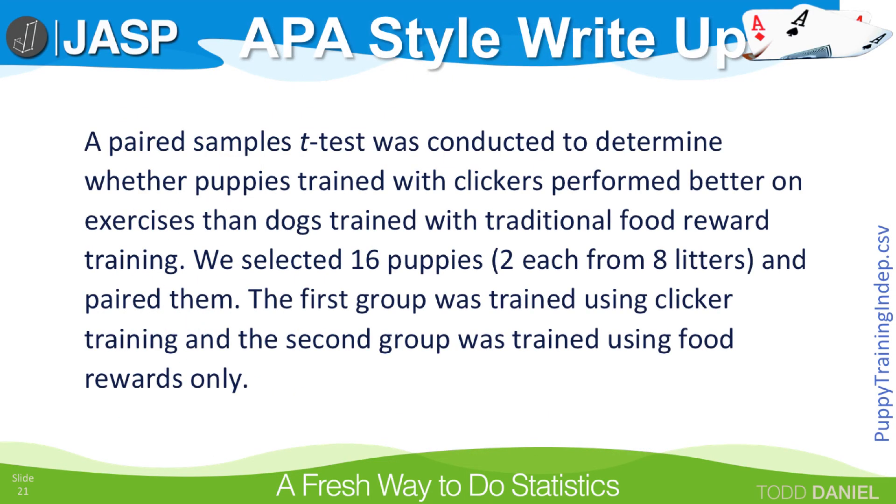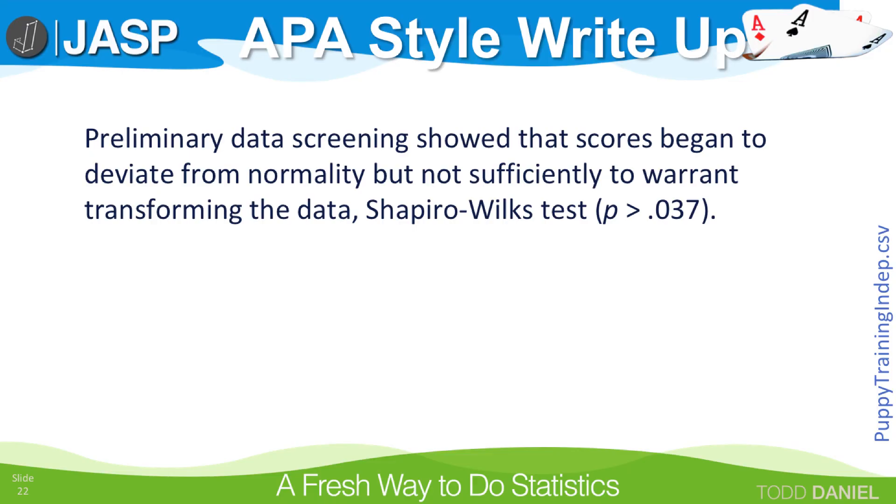Here is an example of how we might write up these results in APA style. First, I would describe my research design and how I conducted the experiment. Then I would describe my assumptions checks. We will interpret the Shapiro-Wilks test at the 0.01 level, which is common for assumptions checks, and we will not transform these data to correct for that non-normality. They do not deviate from normality badly enough to warrant that.